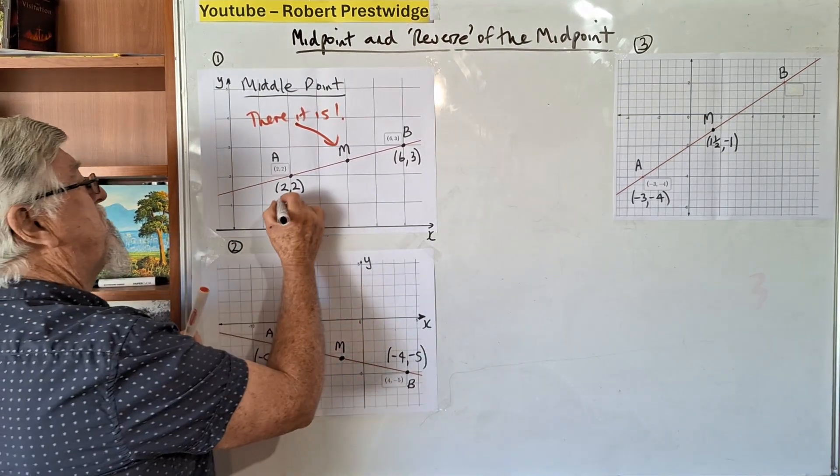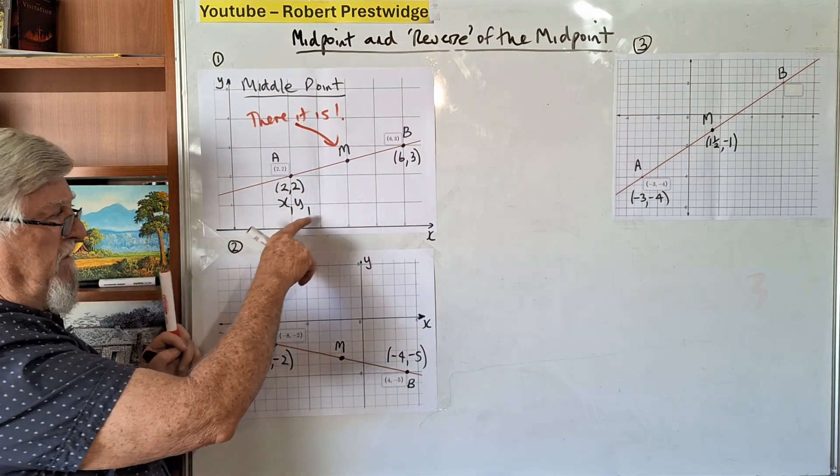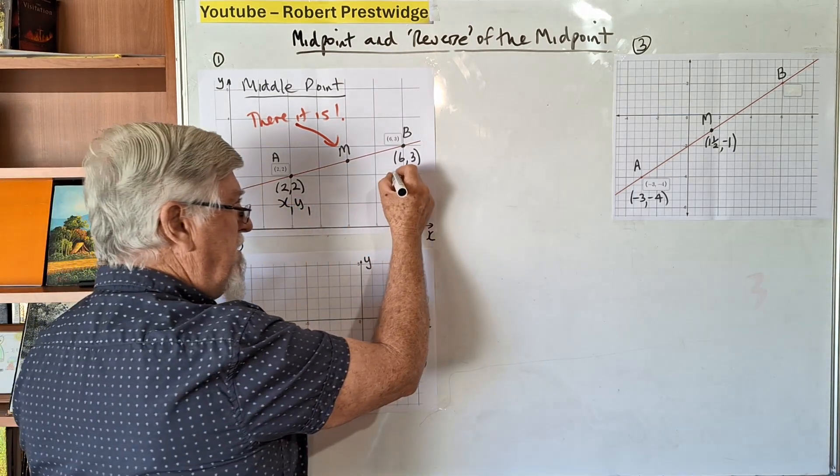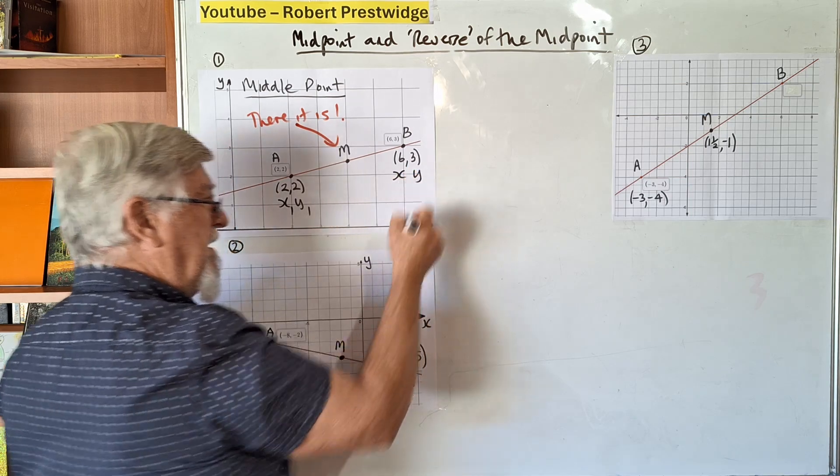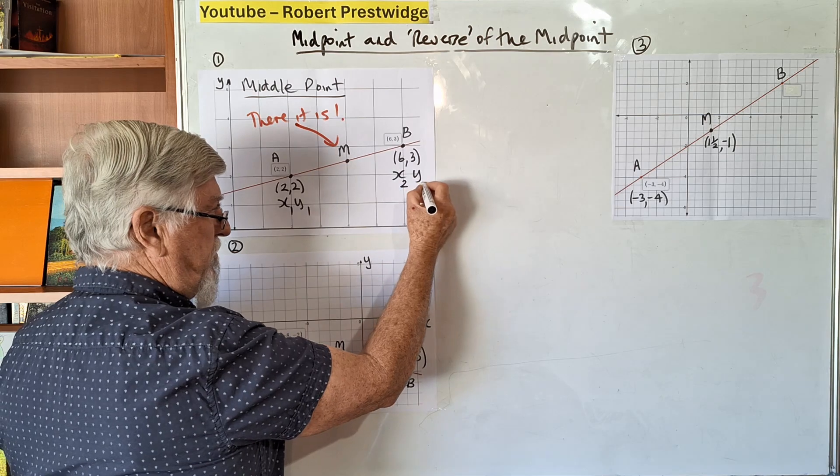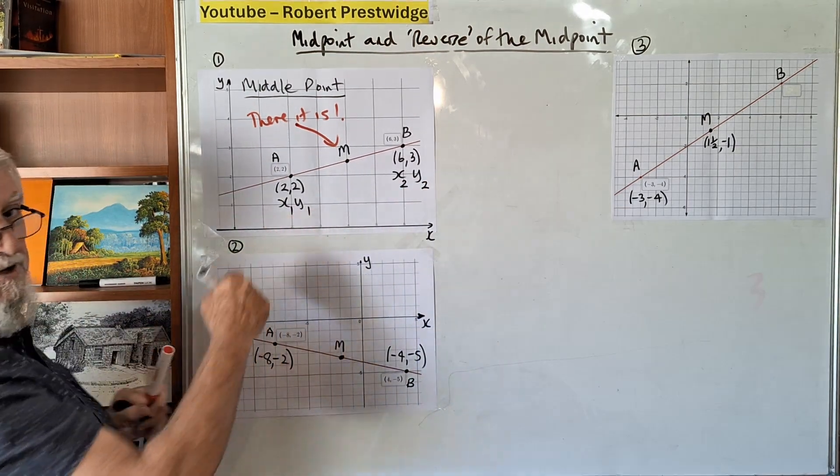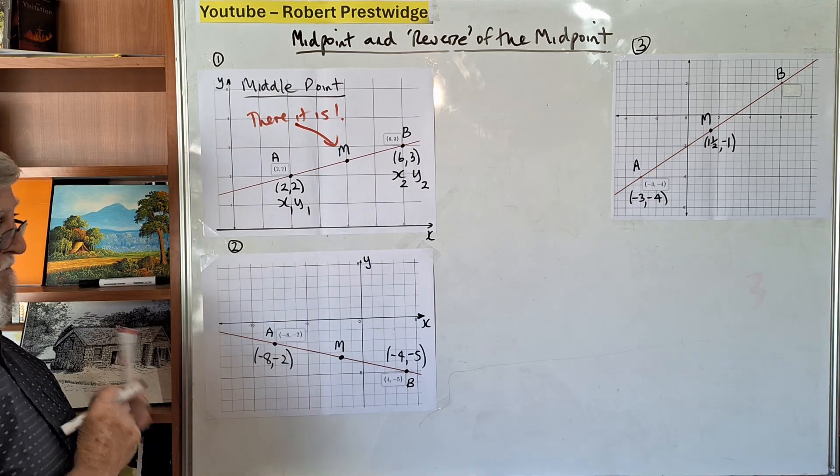We use subscripts x₁, y₁ and x₂, y₂ to tell the two points apart. I've had students mix up and call it x₁, x₂ instead of keeping coordinates together. Just be careful about that.